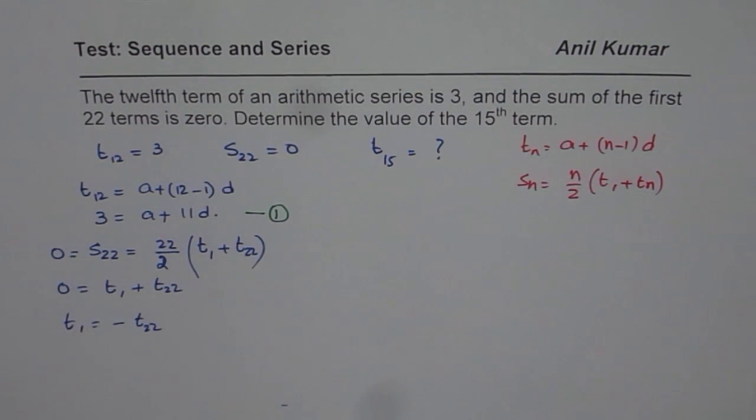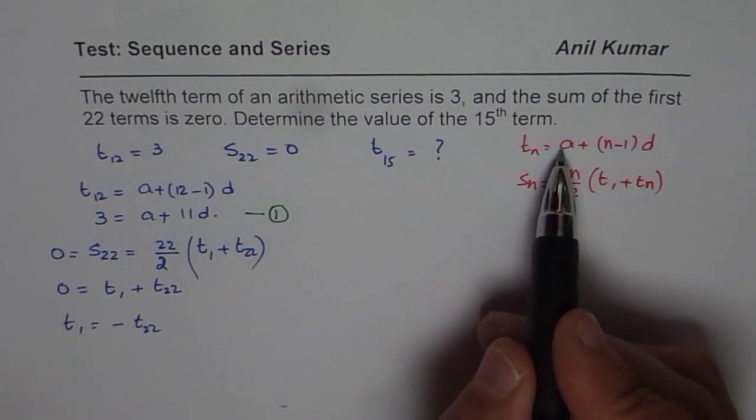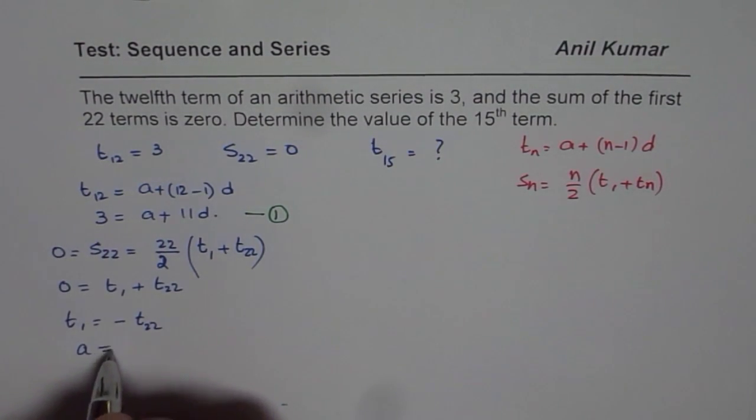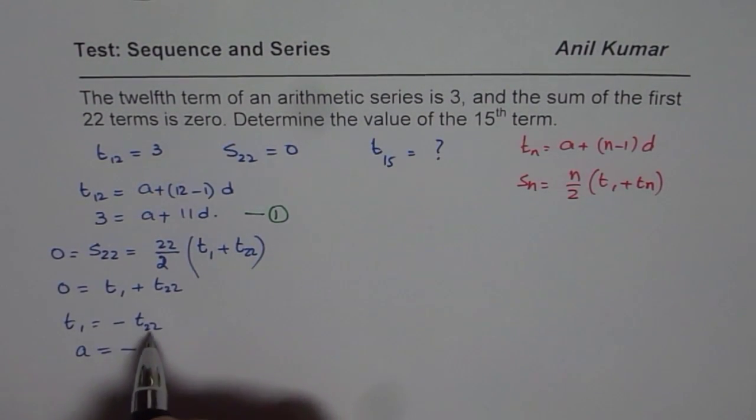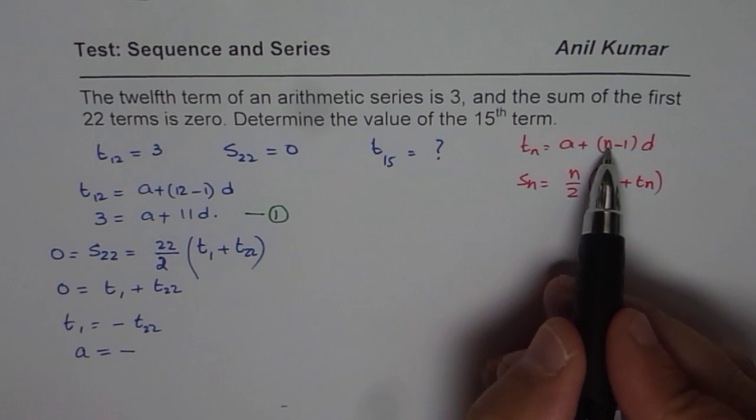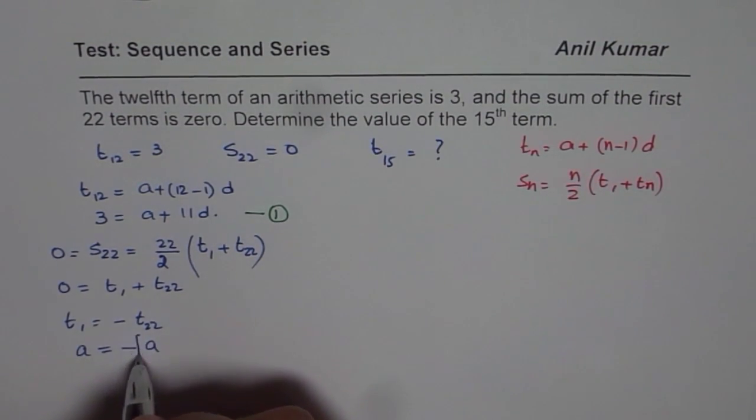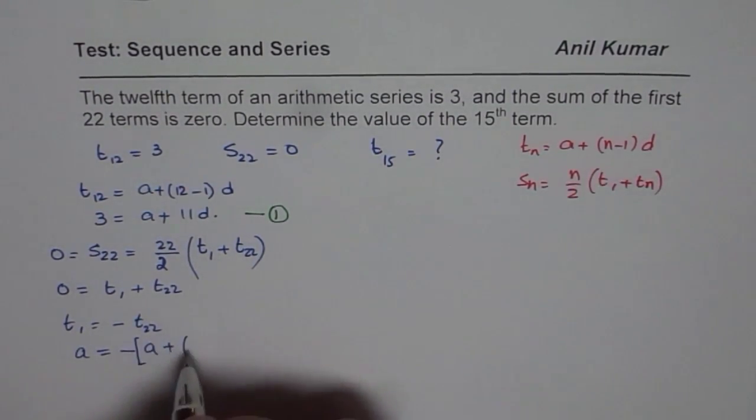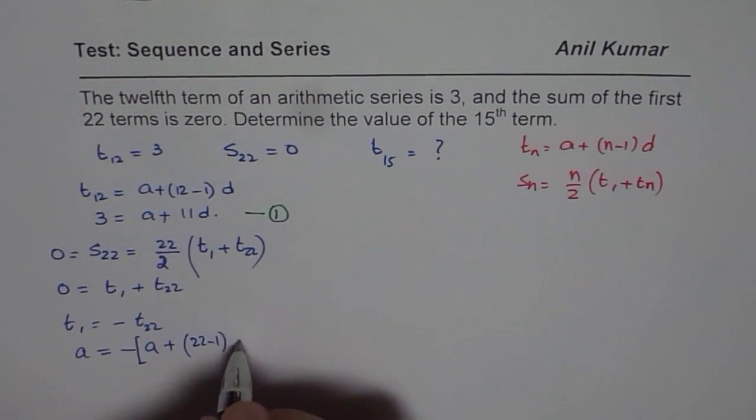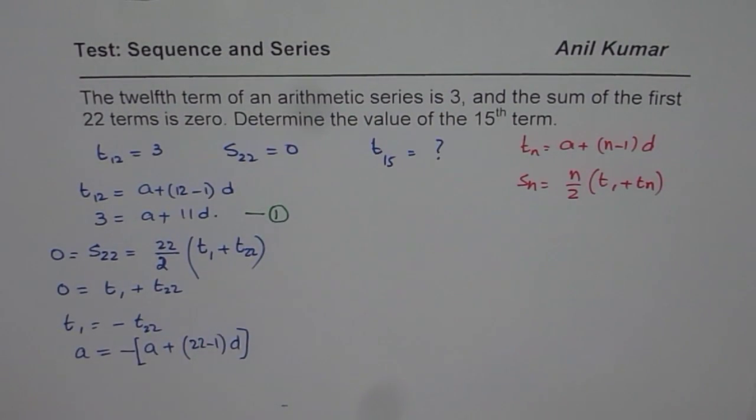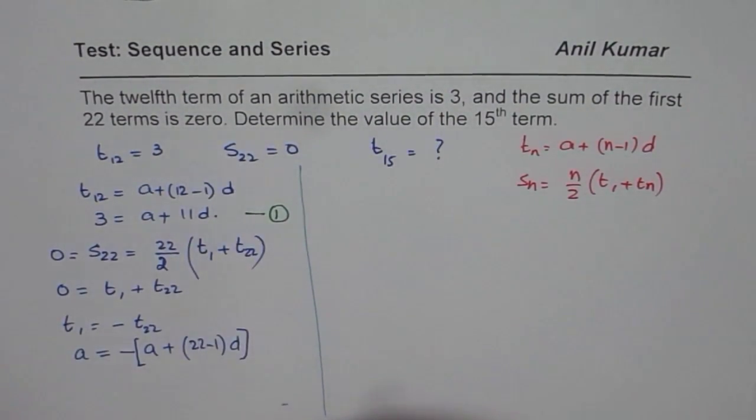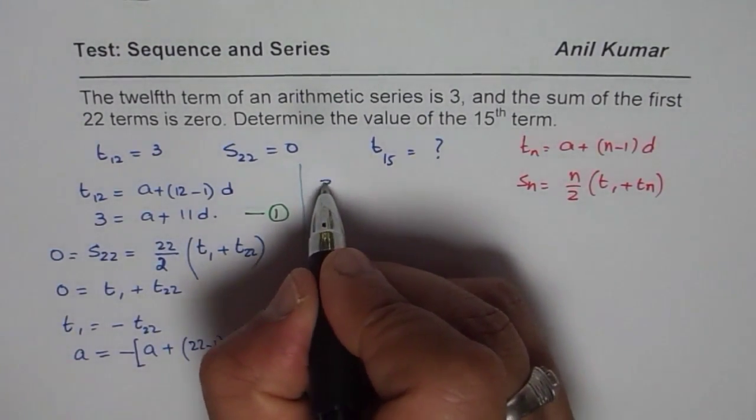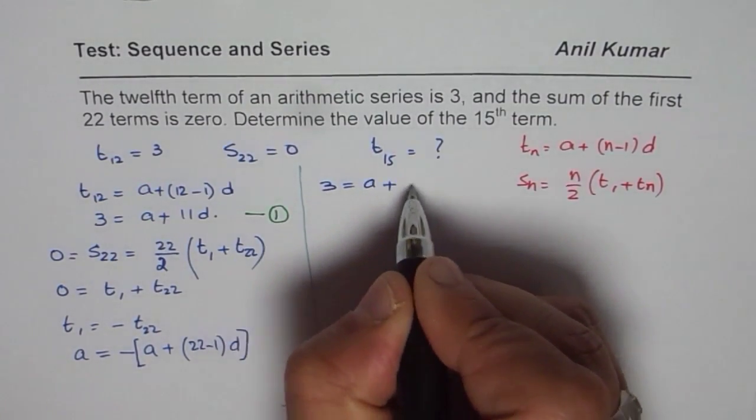Now from here, we can write down the second equation. So what is T1? T1 will be in this equation if I put 1, which is A. So T1 is A for us. We say A equals minus of T22. I will put 22 now, so I will get A plus 22 for N, 22 minus 1 times D. So I get my second equation. Let me clearly write down both the equations on the right side of this line.